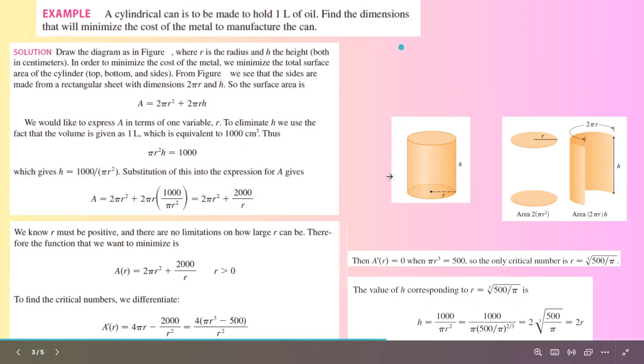So to minimize the cost, these are the dimensions that we should have. You can use a calculator to find these numbers. They are a little bit difficult to calculate, so the best way is to use a calculator.